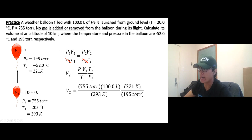P1 is 755 torr, V1 is 100 liters, T1 is 293 Kelvin. T2 is 221 Kelvin, P2 is 195 torr.